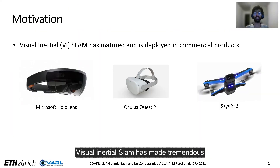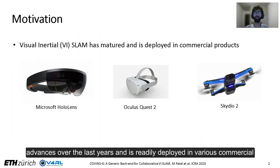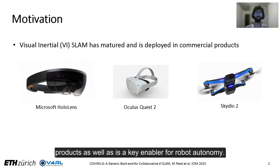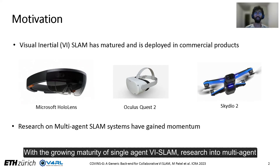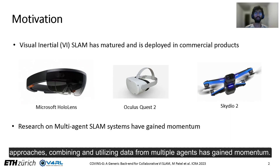Visual Inertial SLAM has made tremendous advances over the last years and is readily deployed in various commercial products, as well as being a key enabler for robot autonomy. With the growing maturity of single agent VI SLAM research, multi-agent approaches combining and utilizing data from multiple agents have gained momentum.